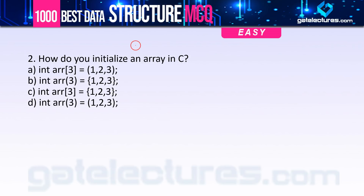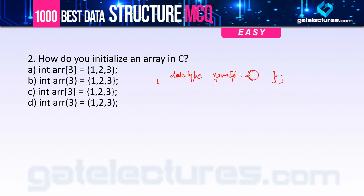Question 2 asks: how do you initialize an array in C? In C, you write the data type, then the array name (which cannot start with a number), then square brackets specifying the size — which is optional — and then the elements separated by commas. Option 1 is wrong due to incorrect bracket usage. Option 2 is also wrong. Option 3 is correct in all ways. Option 4 uses wrong brackets, so it's also incorrect.